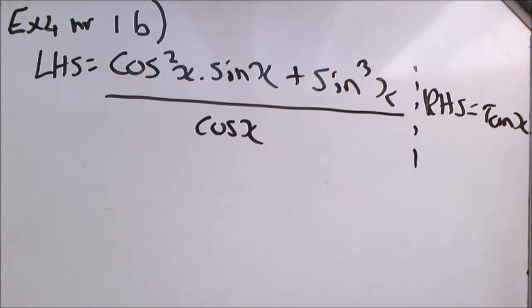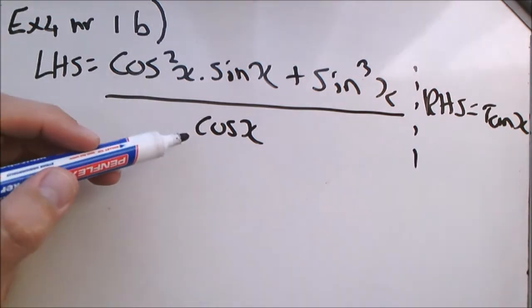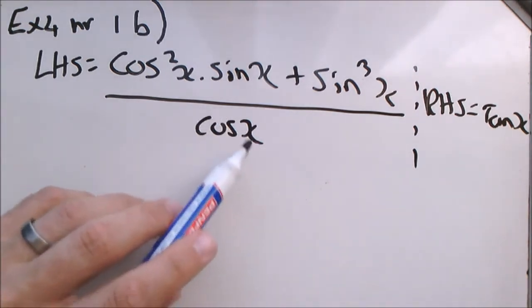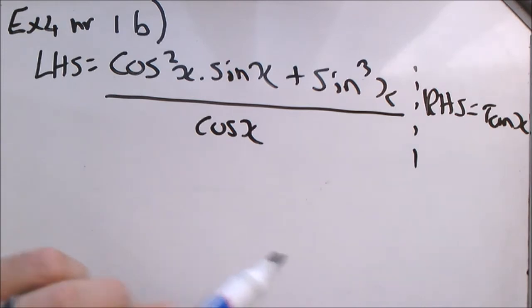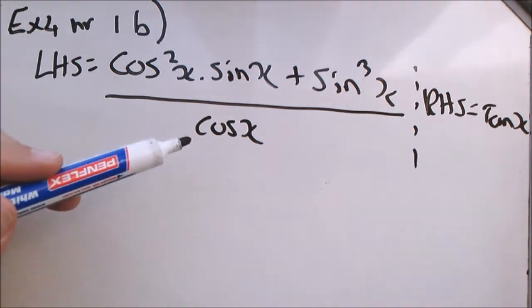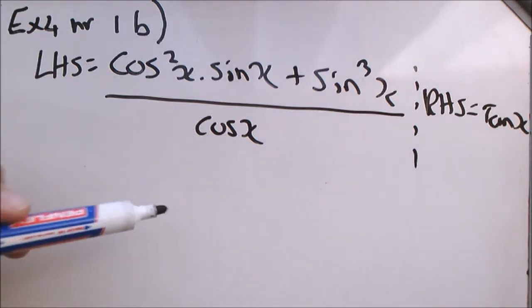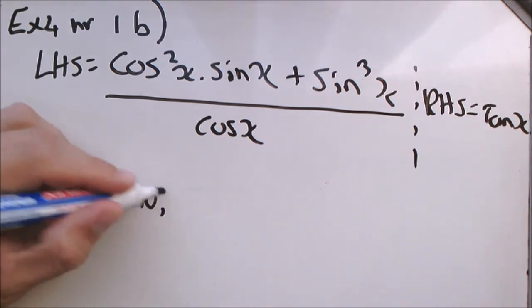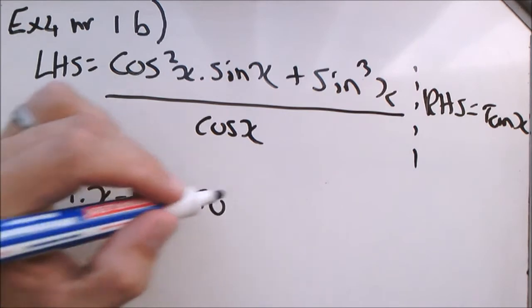If we use the left hand side, you see we are dividing by cos x. In other words, where cos x is equal to 0, this identity will become undefined. And cos x is 0 at 90 and 270. And so therefore, we say at x equals 90 and 270, this identity will be undefined.